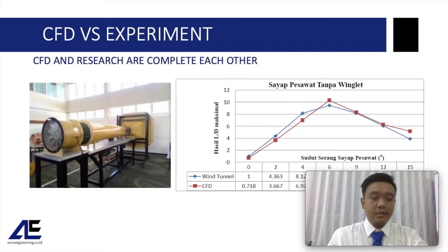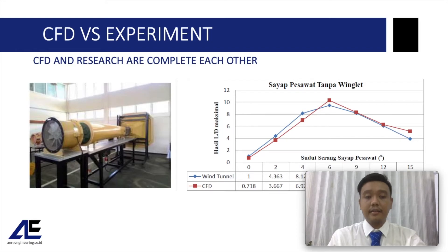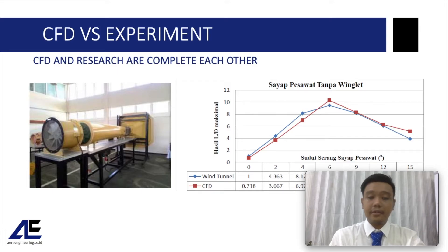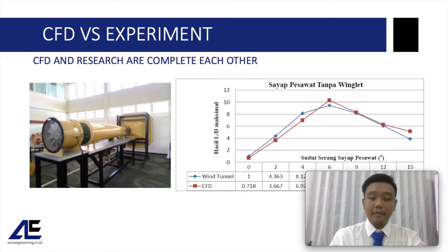One of the most common concerns about CFD is skepticism regarding its accuracy. Is CFD accurate? Yes, it can be very accurate, but it depends on the operator's experience. Comparing CFD and experimental method accuracy is not entirely fair because they are different tools with different uses. Both have advantages and disadvantages, and more importantly, they complement each other — sometimes we use experimental results to validate CFD theory, or vice versa.